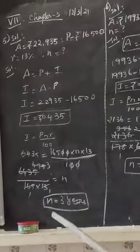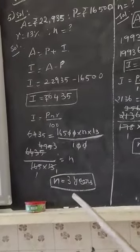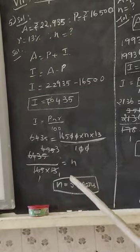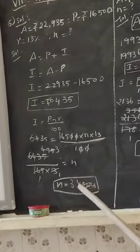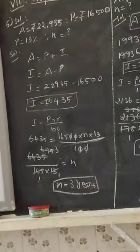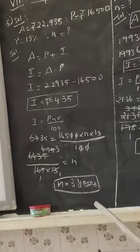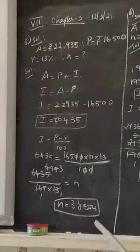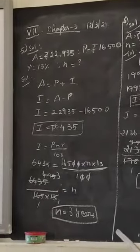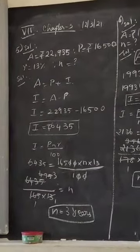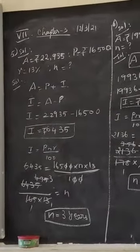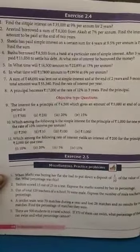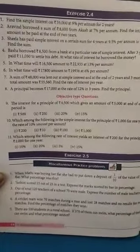So n equals 6435 divided by (165 multiplied by 13). Using cancellation with the multiplication table, we get n equals 3 years. The sixth problem is similar to the fifth problem.